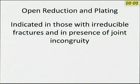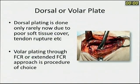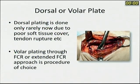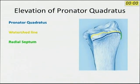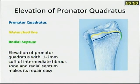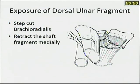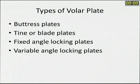Open reduction and plating is indicated in patients with intra-articular fractures. Dorsal plating is no longer commonly performed. Volar plating is done by the extended flexor carpi radialis approach. The yellowish watershed line and the pronator quadratus distal attachment are important landmarks. If you elevate the pronator quadratus 2 mm distal to its attachment, repair is much easier. For complex fractures requiring dorsal exposure, the brachioradialis can be cut and the shaft fragment rotated to expose the dorsal surface.